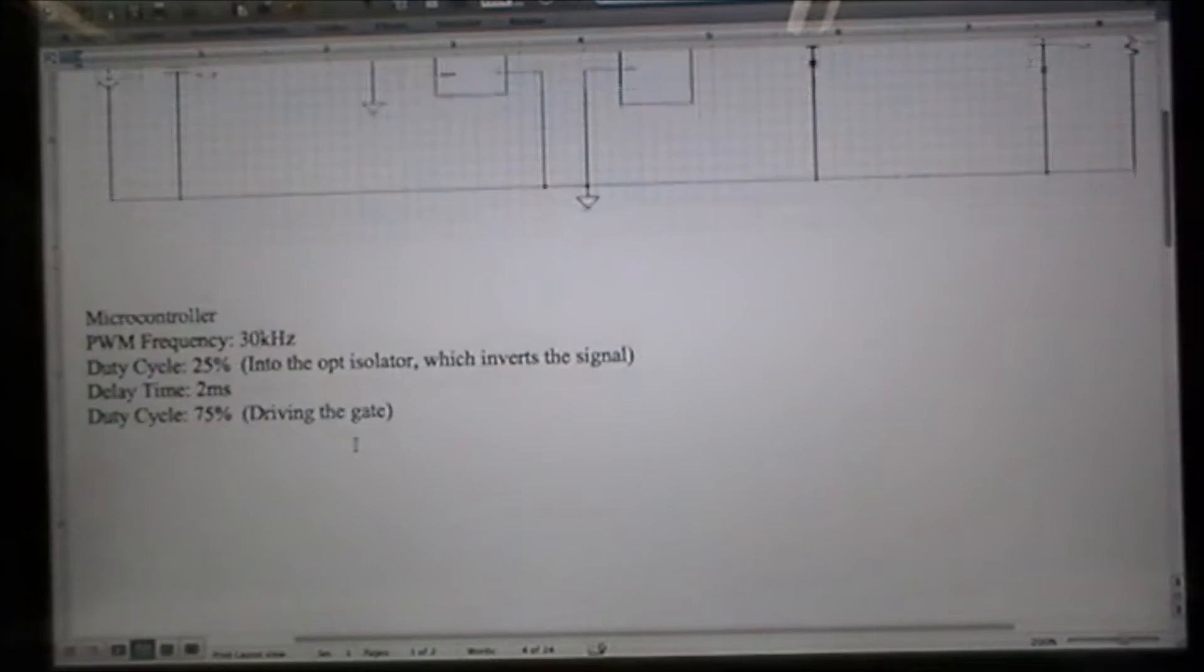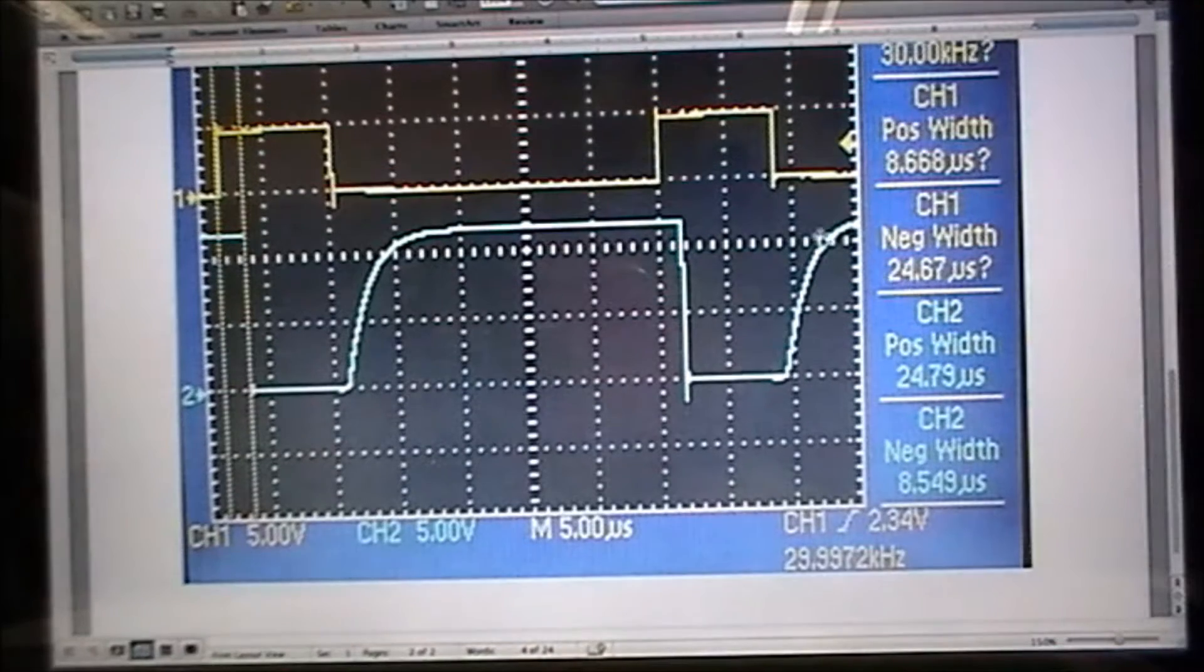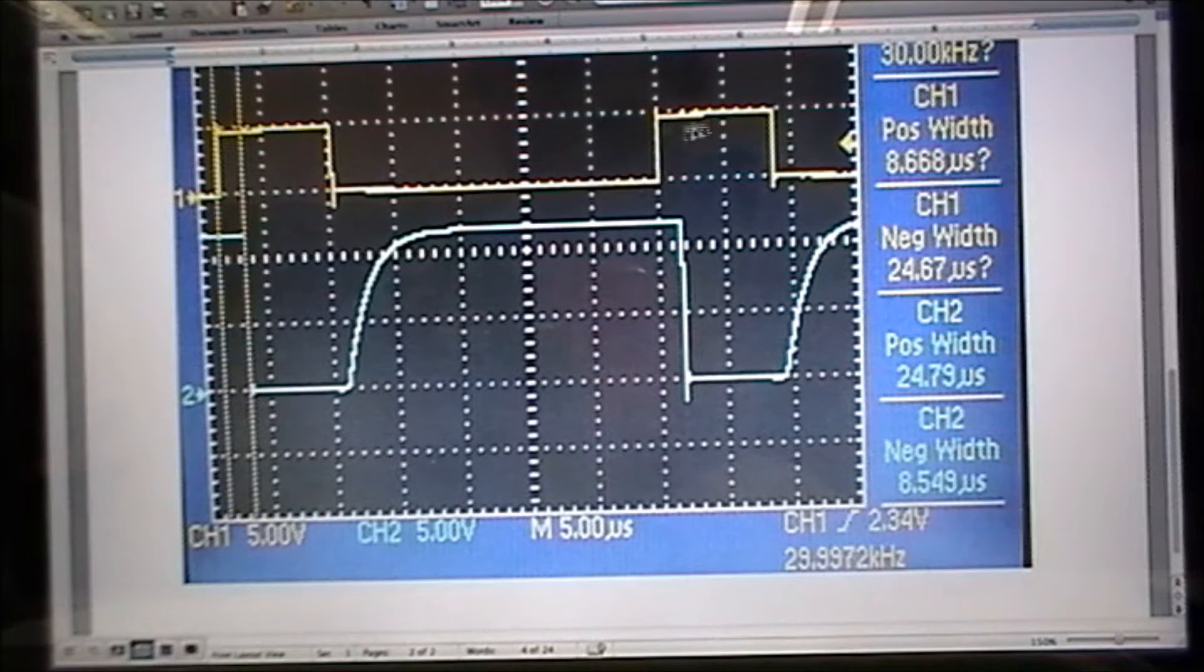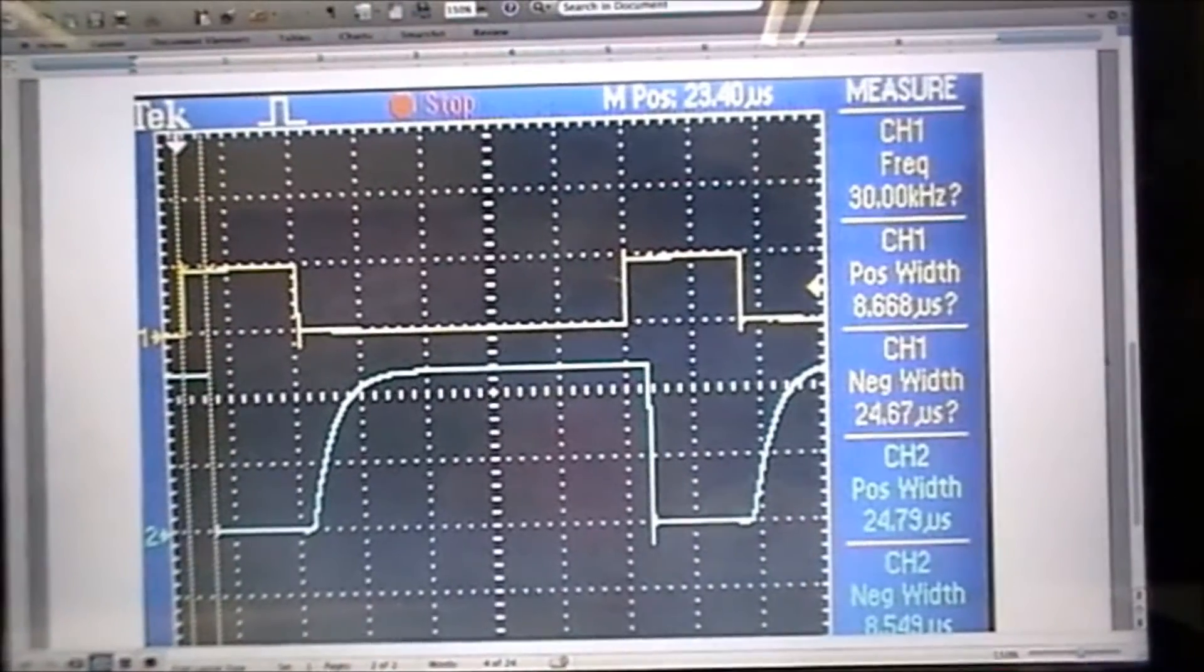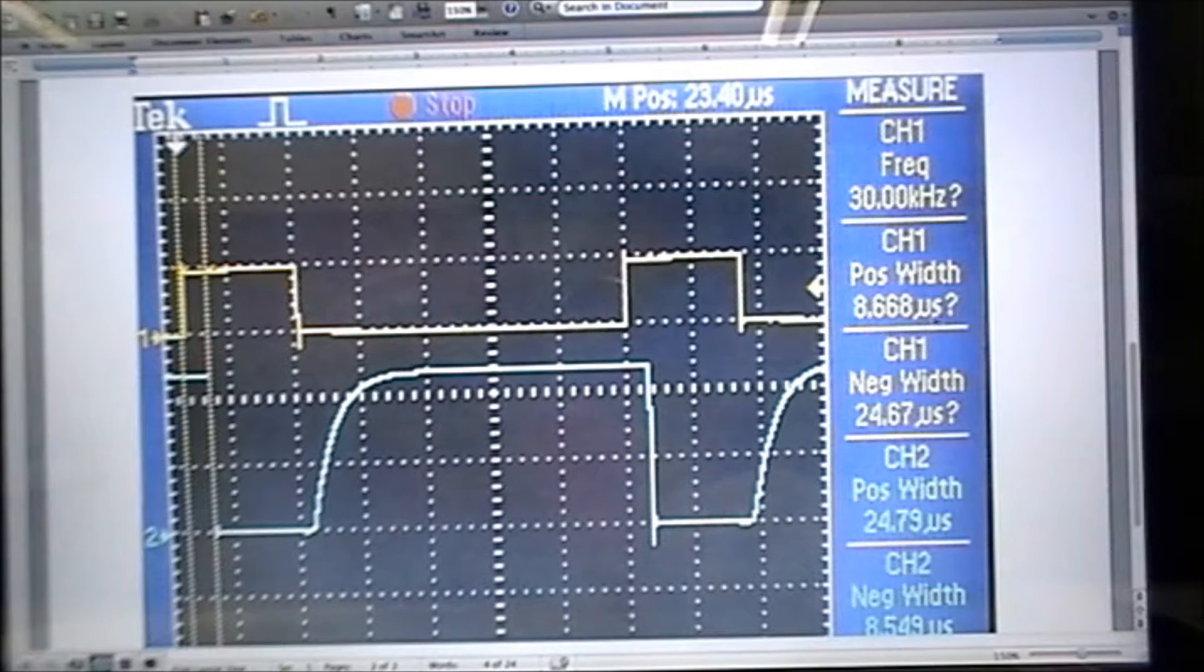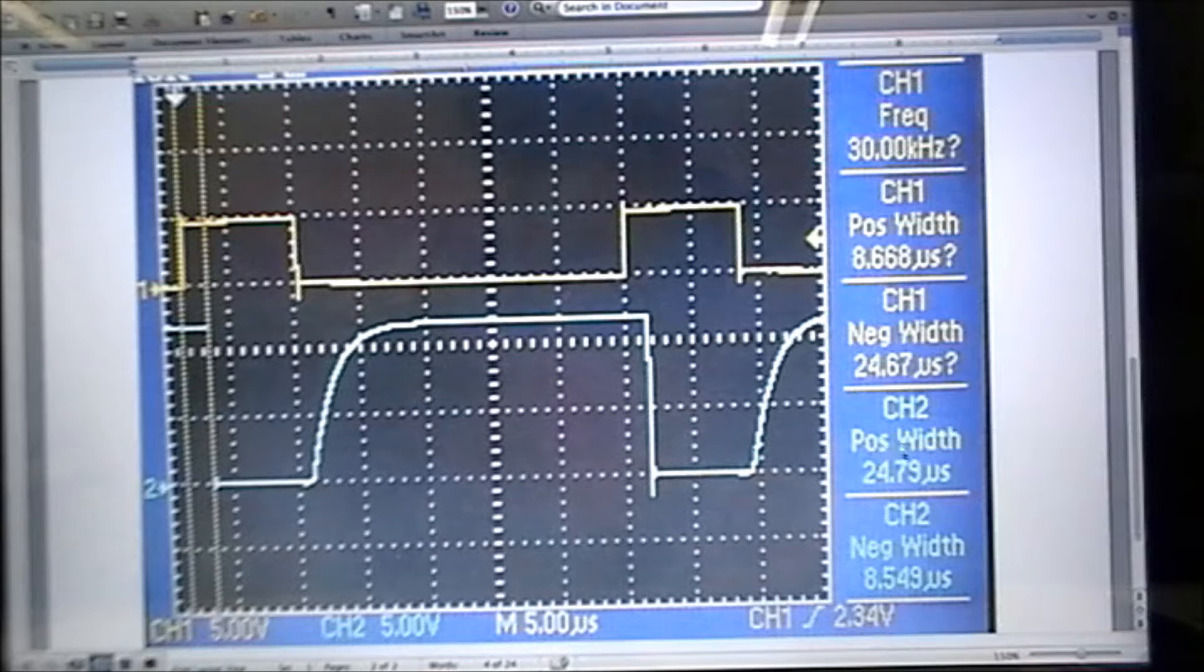Here's an image of the waveforms. Channel 1 is our input from the microcontroller - it's a 30 kilohertz square wave with a duty cycle of 25 percent. Channel 2 is the output of the optocoupler, showing there's a 2 millisecond delay. This was one of the problems when using the microcontroller - we could not decrease the duty cycle too much more than this because of the delay time. From this graph you can see we did achieve the 30 kilohertz, and then this would be your 25 percent on time, 75 percent off time. As you can see, the optocoupler has the opposite of that - that's what's actually driving the transistor.